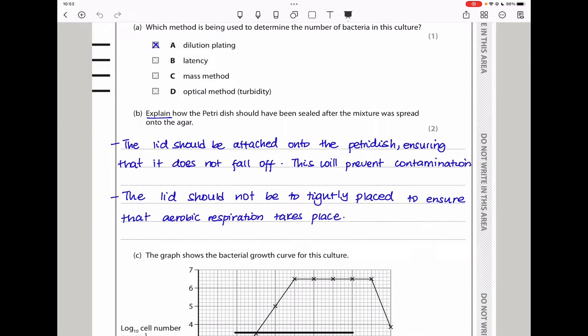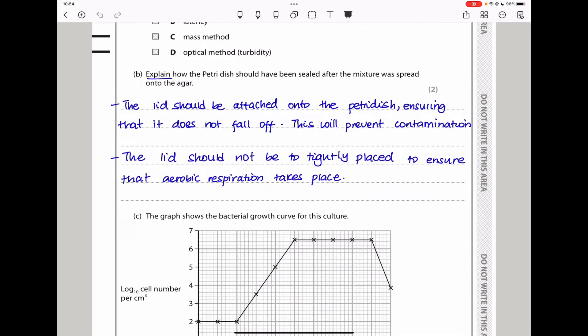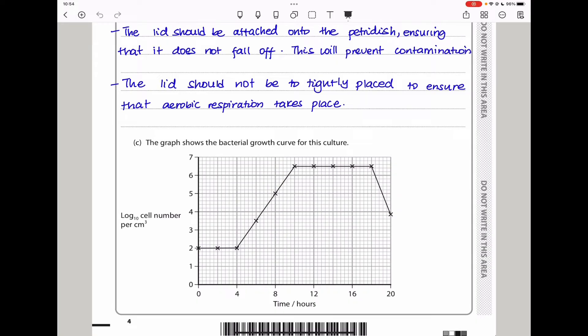Part B says, explain how the petri dish should have been sealed after the mixture was sprayed onto the agar. Remember the petri dish is there for protection to prevent contamination. So the lid is there to prevent contamination. The lid should be attached onto the petri dish, ensuring that it does not fall off. This will make sure there is no contamination. Some foreign bacteria will not come into the petri dish to grow and compete with the bacteria interested in culturing for nutrients and space. Also the lid should not be tightly placed onto the petri dish to ensure that aerobic respiration can still take place. Remember some bacteria that are going to be cultured, if they require oxygen, we need oxygen to be able to come in and the waste gases to be able to leave.